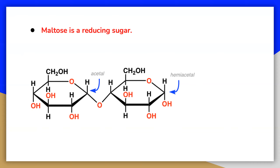The glucose units in maltose are joined in a head-to-tail fashion through an alpha linkage from the first carbon atom of one glucose molecule to the fourth carbon atom of the second glucose molecule. This forms an alpha-1,4 glycosidic linkage which connects the two glucose molecules. The bond from the anomeric carbon of the first monosaccharide unit is directed downward, which is why this is known as an alpha-glycosidic linkage.